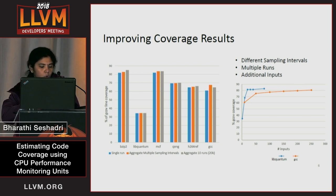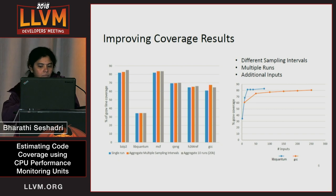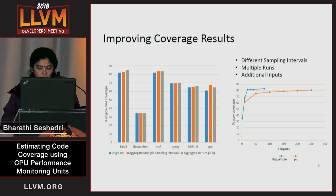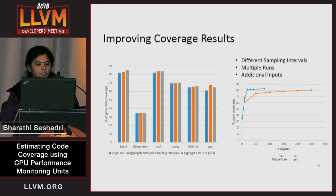When we ran the same benchmark on different inputs, that gave significant improvements. For example, LipQuantum, one of our lowest-performing benchmarks, by just trying different inputs from 1 to 10, the coverage almost doubled. And even for GCC, we got over 20% improvement by just running it on different inputs. While the GCOF coverage does not vary much, the PMU coverage improves a lot.